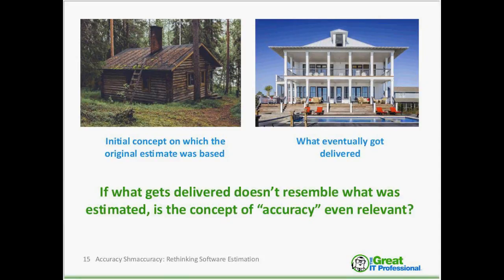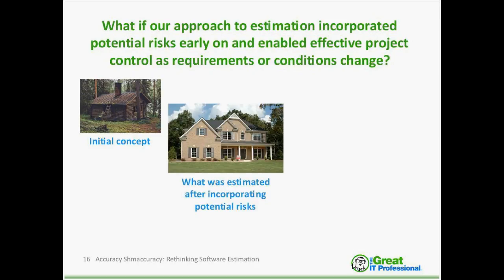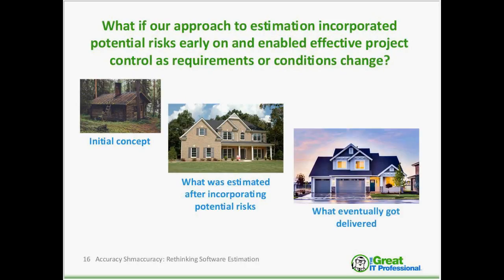What if our approach to estimation incorporated potential risks early on and enabled effective project control as things changed? Starting with our initial concept of estimating that cabin, we put together an estimate that incorporates potential risks and anticipates changes. What we end up delivering then looks more similar to the initial estimate, and we're re-estimating as change occurs to make sure the project can still be delivered on time and within budget.